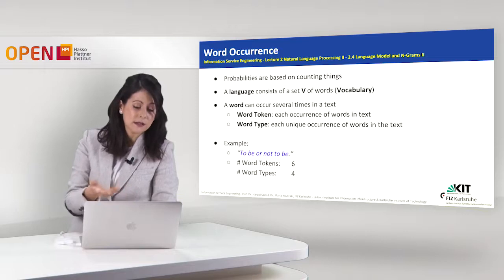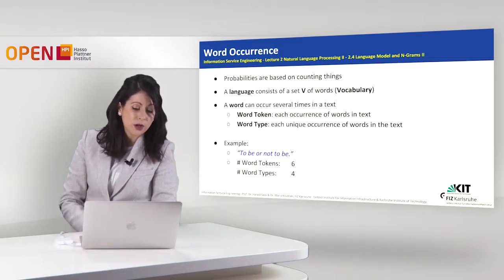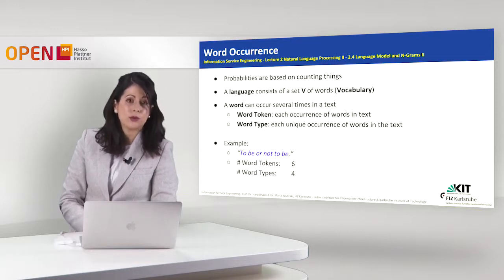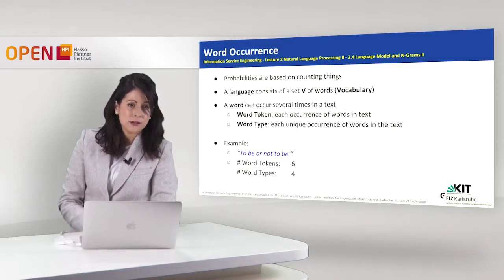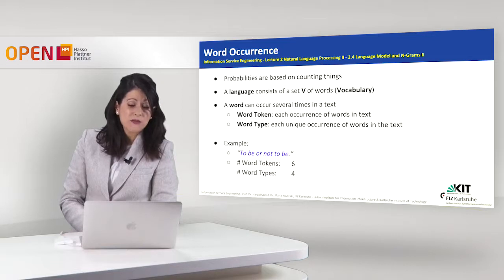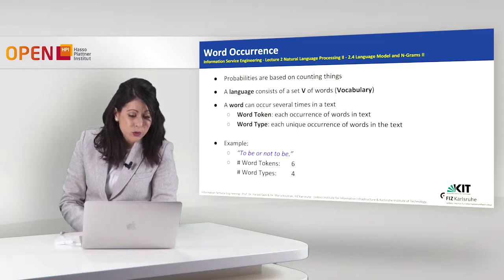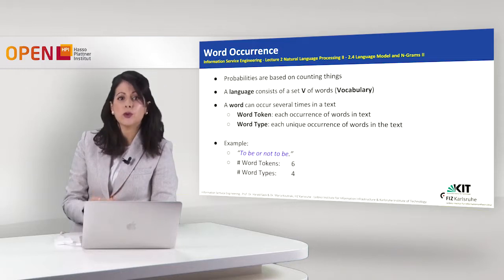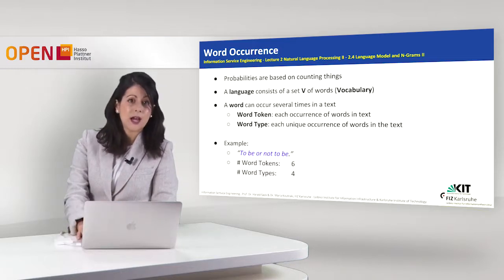Let us make this clear with an example. Take the sentence 'to be or not to be' as our corpus. How many word tokens do we have? We have six word tokens — meaning six words in this sentence. But how many word types? We have only four word types, because two of the words, 'to' and 'be,' are repeated twice. That is why we have the difference between word tokens and word types.